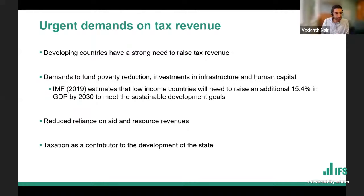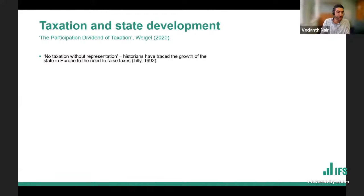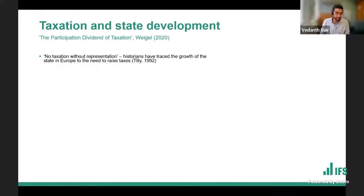There's also an interesting subfield of the literature looking at how taxation itself contributes to democracy and development. There's an old saying from the American Revolution: no taxation without representation. Historians have looked at the growth of democracy and the social contract in Europe as linked to the need to raise taxes — governments needed to raise taxes, and as a bargain for that, there was a growth in democracy and the development of the modern state.